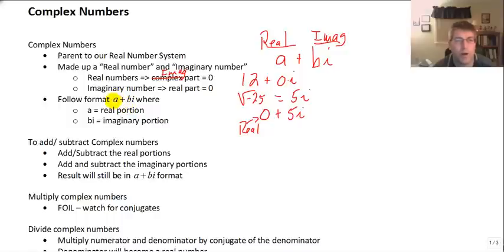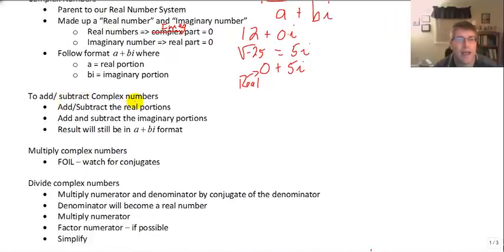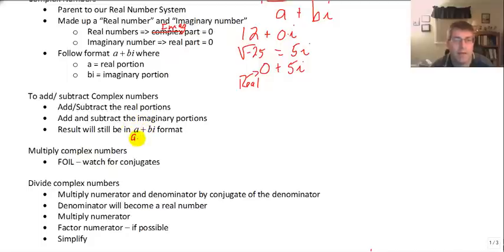We always use the format with the real part to the left of the imaginary part. In this video, we're also going to add and subtract complex numbers. When we add and subtract complex numbers, we split it into two parts: we add or subtract the real portions, and then we add or subtract the imaginary portions, and combine them in the format a plus bi — or a minus bi, that's fine as well.